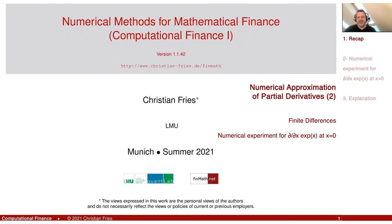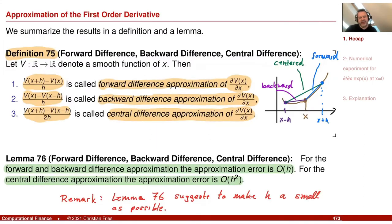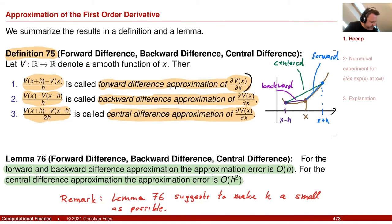Welcome back to Numerical Methods. So we started discussing how we can approximate partial derivatives. The first session was very easy. We just used the Taylor expansion, and by plugging in different points we got equations using Taylor expansions. Then by nicely combining the equations we can single out expressions for certain derivatives. And we derived here, for example, these three different approximations for the partial derivative of dv by dx.